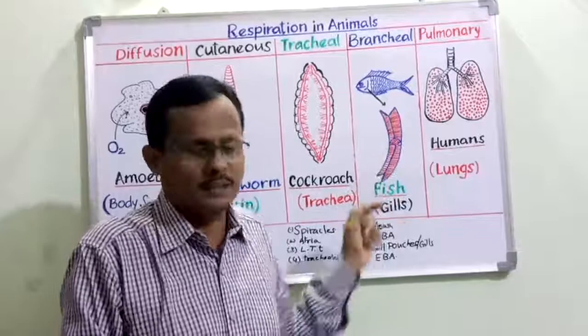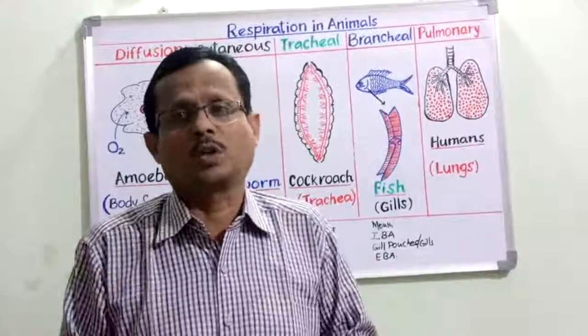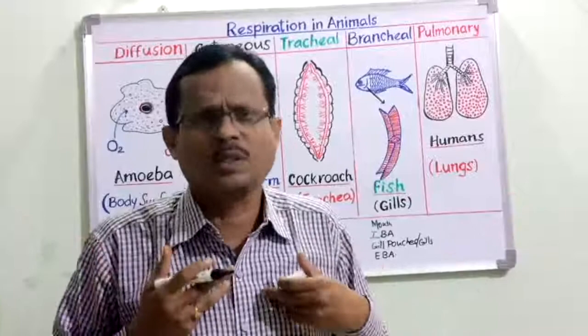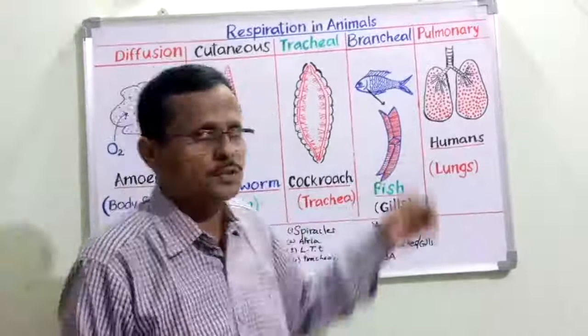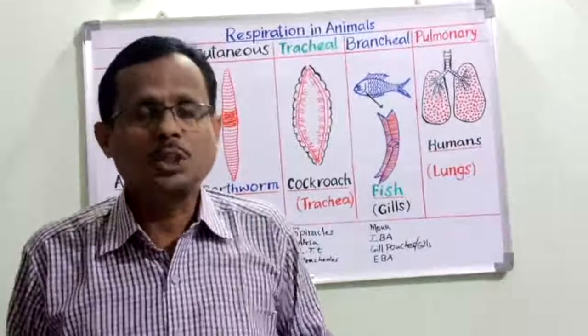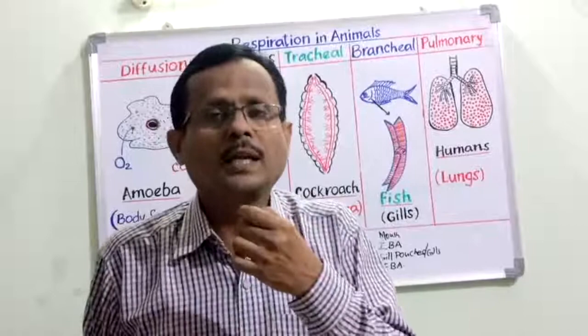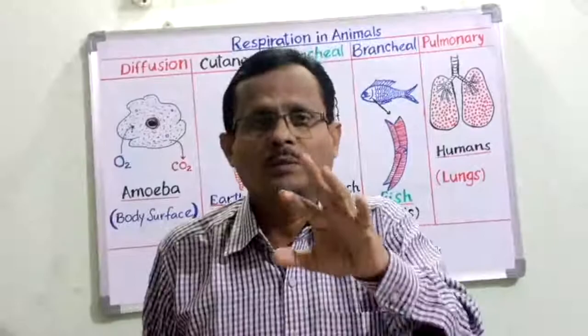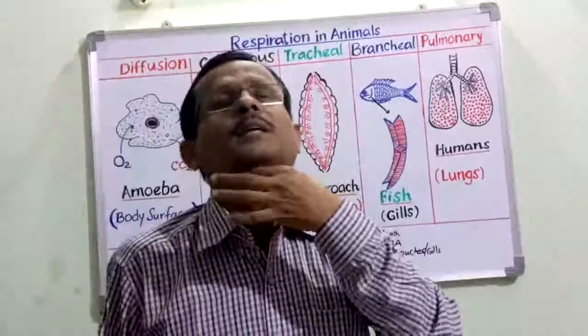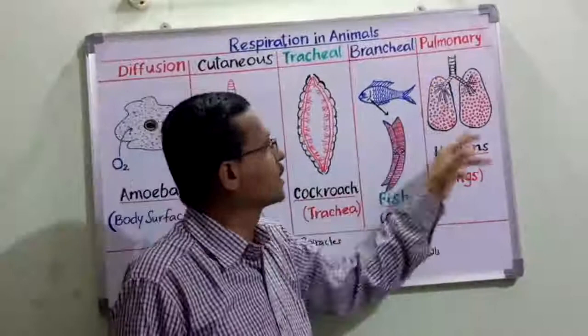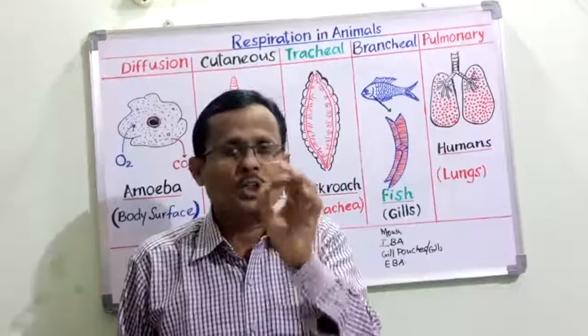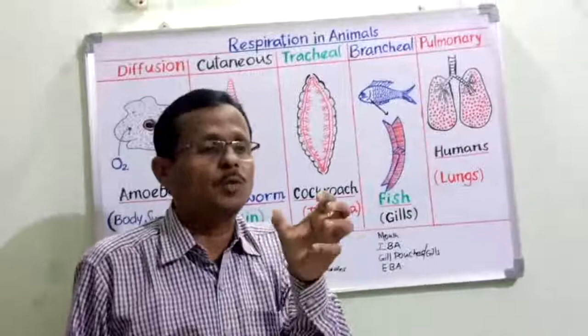Finally, human beings are highly evolved animals. In humans, we have a pair of lungs situated in the thorax. Air enters through the external nostrils into the nose, and from there into the trachea — a cartilaginous tubule supported by C-shaped cartilaginous rings that prevent it from collapsing.